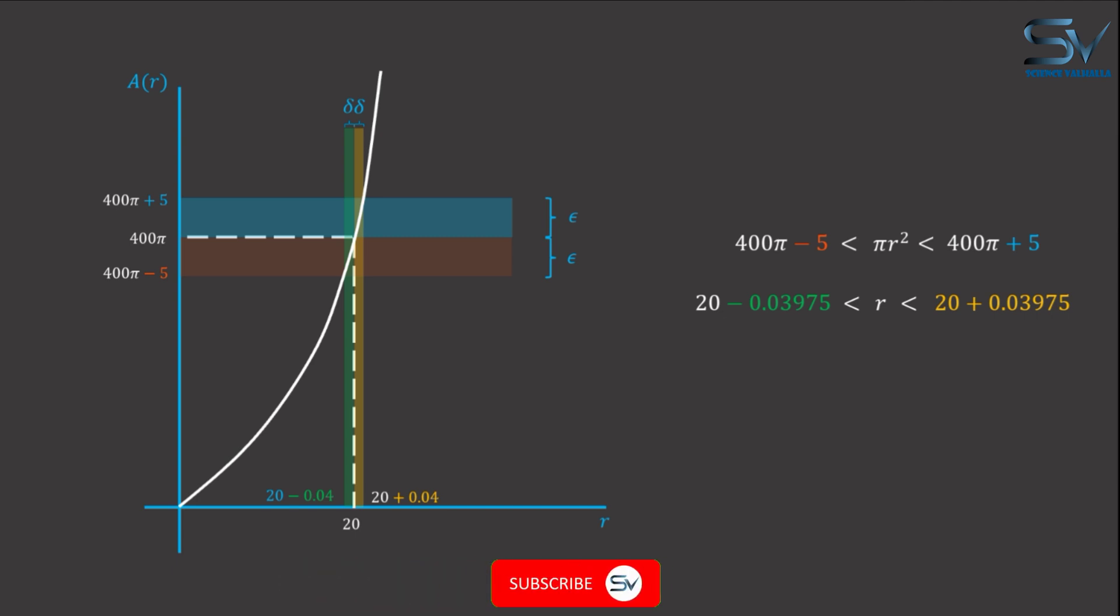Mathematically, for every number epsilon, there exists delta depending on epsilon. Secondly, when it comes to limits...